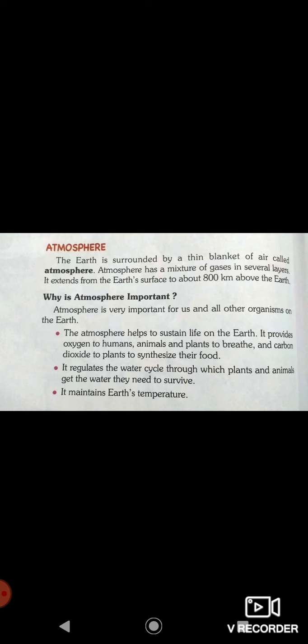Now atmosphere. The earth is surrounded by a thin blanket of air called atmosphere. Our earth is covered from all sides by a kind of thin blanket, which is called atmosphere. Atmosphere has a mixture of gases in several layers. It extends from the earth's surface to about 800 km above the earth. The atmosphere starts from the earth's surface, where we live, where plants grow, where animals live, and it goes up to 800 km.